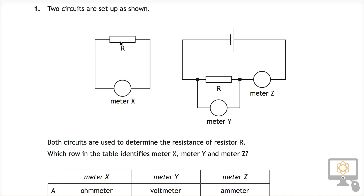Resistor R is here, probably the same resistor. Which row in the table identifies meters X, Y and Z? In this circuit, the resistor is not connected to any external supply — no battery, no power supply. So the only type of meter that would be used here to determine its resistance would be an ohmmeter.